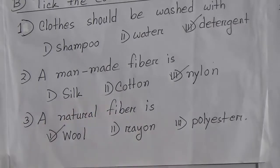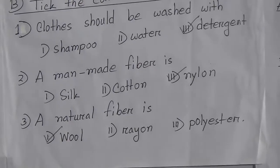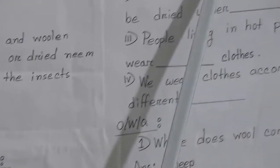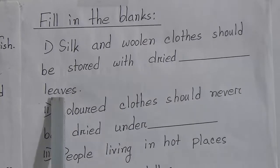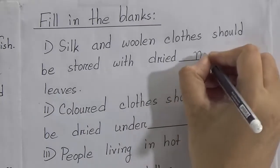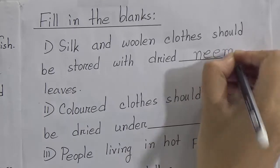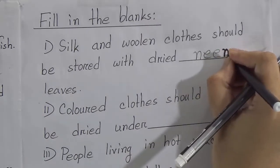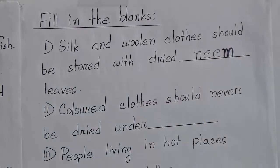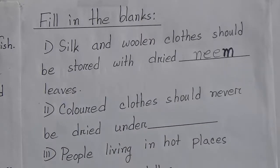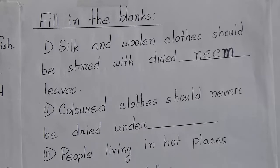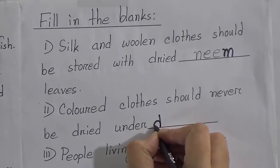Number three: A natural fiber is — options are wool, rayon, or polyester. We know wool is a natural fiber, so we put a tick there. Next exercise: Fill in the blanks. Number one: Silk and woolen clothes should be stored with dried neem leaves — so the answer is neem. Number two: Colored clothes should never be dried under direct sunlight — so the answer is direct sunlight.